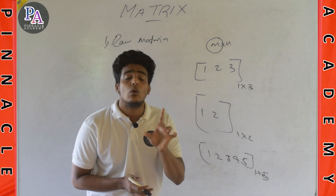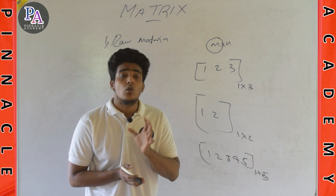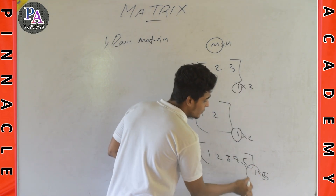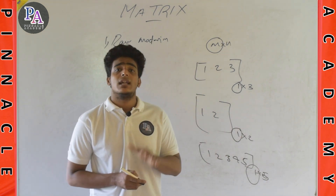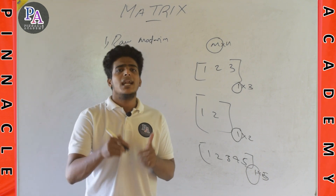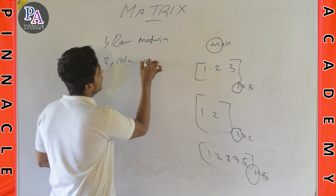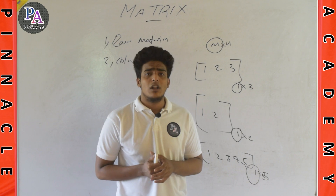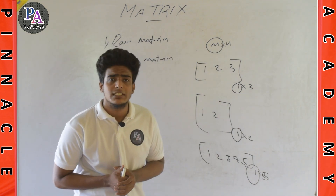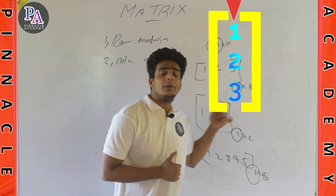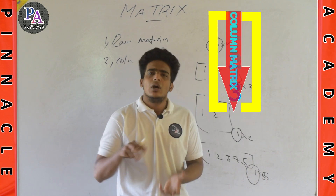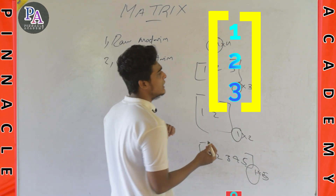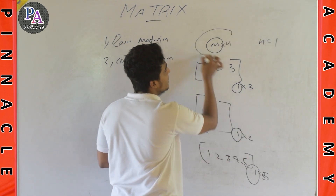We have a row matrix. In any matrix we consider as a row matrix, if the number of rows is 1, that is called a row matrix. If you have a column matrix, the number of rows is 1. The row matrix: m is equal to 1.